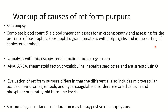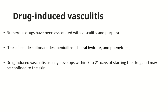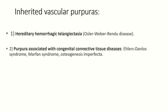To sum up the approach to a patient with retiform purpura: in addition to skin biopsy, CBC, urinalysis, ANA, and ANCA, also pay attention to elevated calcium, phosphate, and parathyroid levels, and search the subcutaneous area for calciphylaxis. Drug-induced vasculitis is discussed separately because it is very common and can present in any of the morphological types discussed. Numerous drugs are associated with purpura and vasculitis, the commoner ones being sulfonamides, penicillin, chloral hydrate, and phenytoin. Drug-induced vasculitis usually develops within 7 to 21 days of starting the drug and may be confined to the skin.